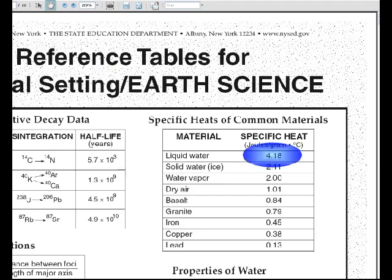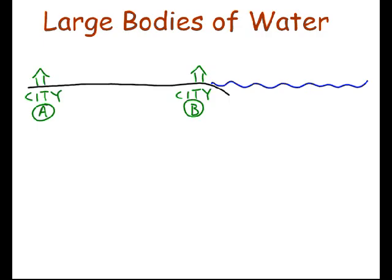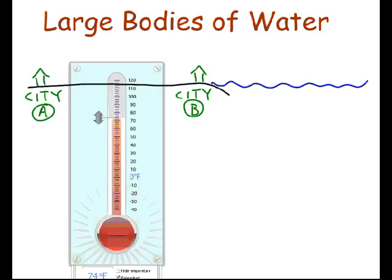Yet land, which is made out of rock, maybe some basalt and granite, has a specific heat of less than 1 joule per gram. So that land is going to heat up a lot faster than the water is going to heat up.